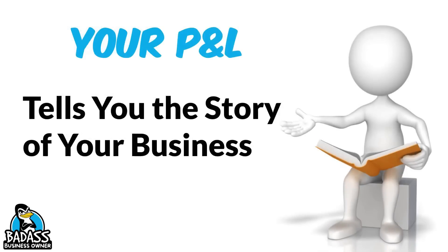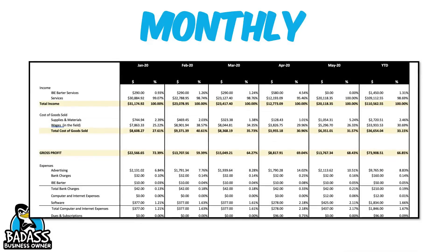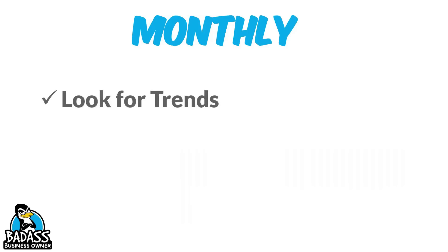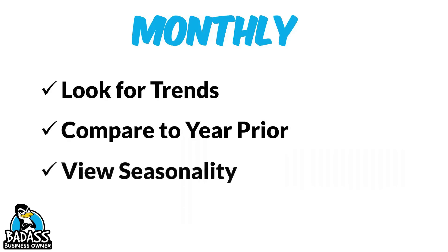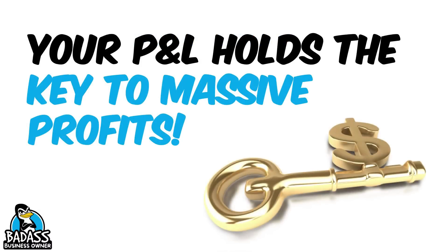We want to make sure that you understand those numbers, because once you understand the numbers and how they look on that piece of paper and what they're telling you, you can start seeing the story of your business and it starts telling you all kinds of really cool stuff. You can get your P&L by month or by year. You can compare this year to last year, month to month, and it's going to tell you all kinds of really cool stuff about your business and how you can make more money — you can look for trends, compare the year prior, view seasonality. When your best months are, when your lowest months are, you can set aside profit for one time of the year versus another. It really is the key to earning more profits.